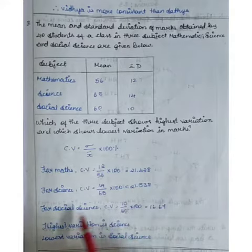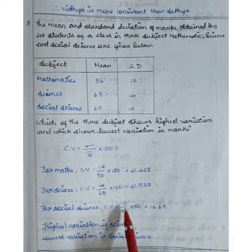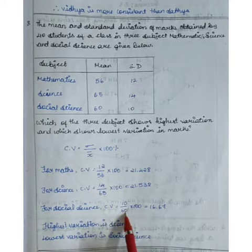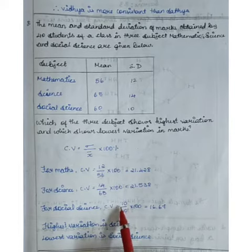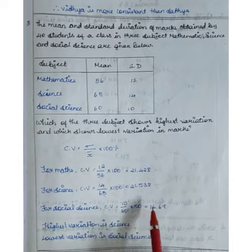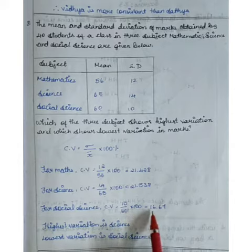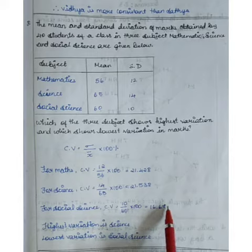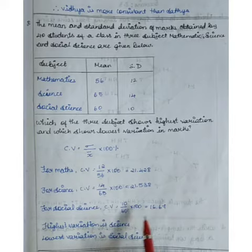For social science: the standard deviation is 10 and x-bar is 16. So the coefficient of variation is 10 divided by 16, into 100, which equals 16.67 after rounding up.